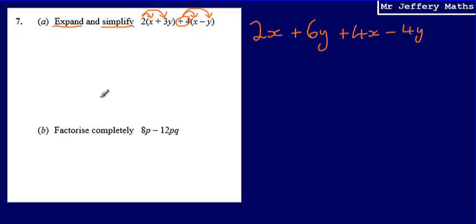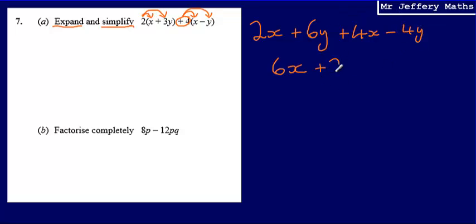All that's left is to simplify, which just means to collect the like terms. I'm going to collect the x's together: 2x plus 4x gives me 6x. And then 6y minus 4y gives me 2y. So the expanding part is there and the simplified version is there.